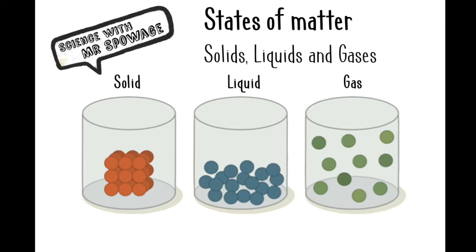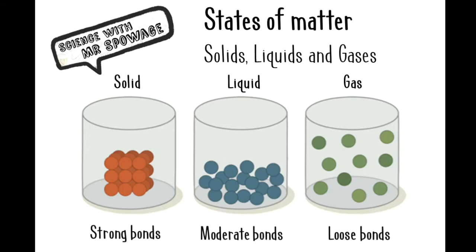When we talk about states of matter in science, we're referring to something being either a solid, a liquid, or a gas. They each are bonded together in slightly different ways, and the molecules move around in slightly different ways. In a solid, they've got very strong bonds. In a liquid, they've got quite moderate bonds and can move around a bit more freely. In a gas, they've got very loose bonds, which means they're able to break free of the other molecules and sort of fly around.